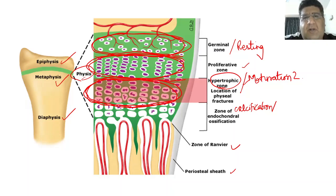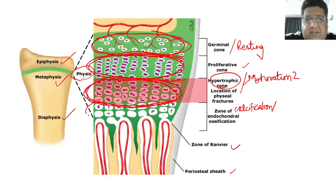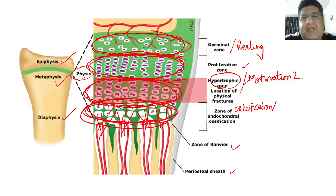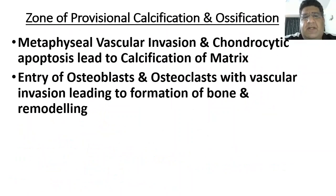Osteoblasts come along certain vessels and start depositing bone, using the cartilage as a scaffold — this is the maturation happening. In this zone you will see chondrocytes undergoing apoptosis and then the metaphysial vascular invasion — the hairpin loop vessels entering this area. This metaphysial vascular invasion combined with chondrocytic apoptosis is the reason behind calcification of the matrix, after which osteoblasts and osteoclasts enter and finally bone is formed with remodeling.